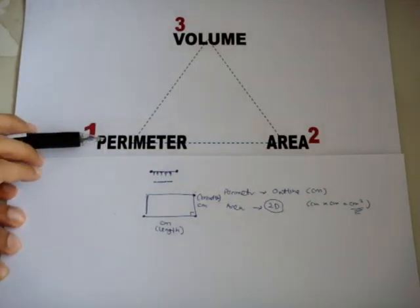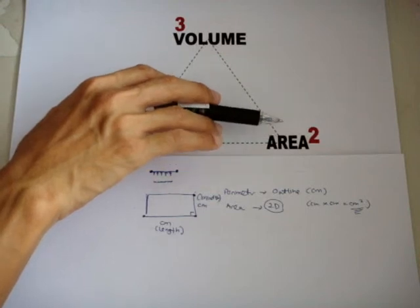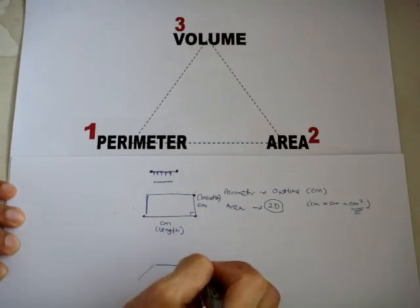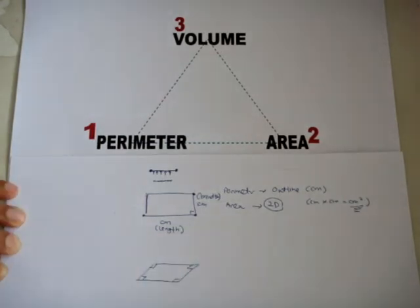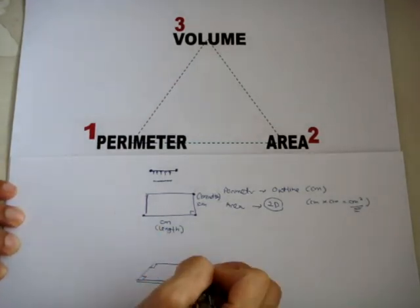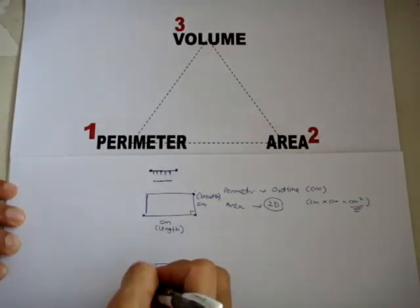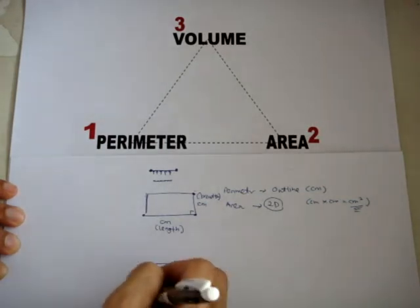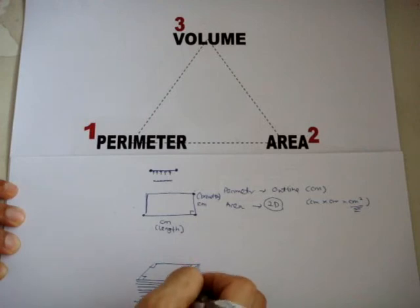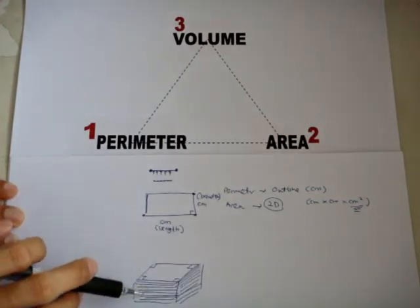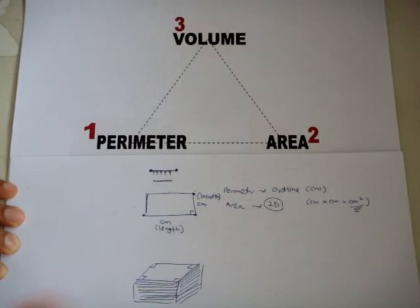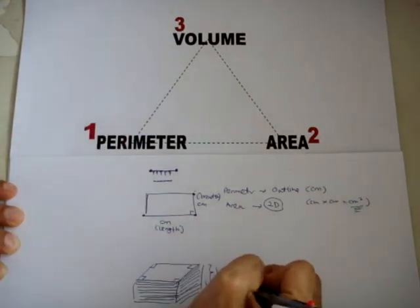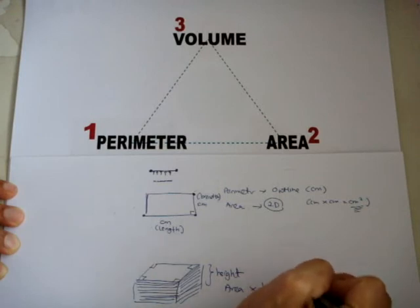You can see how perimeter is related to area, and how area is related to volume. Look at this rectangle — I put up another rectangle, and another, and more rectangles below. As I put more and more rectangles below, something is being created — that is the height. Therefore, area times height gives you volume.